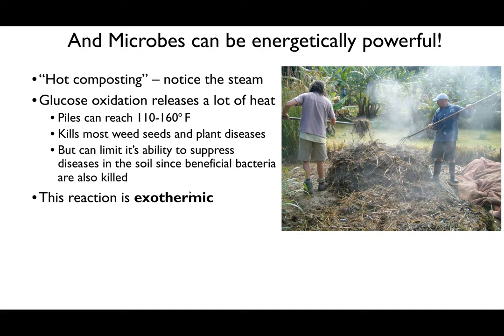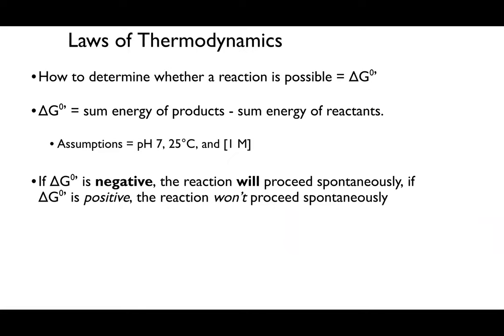The reaction generating energy is what we call exothermic. To talk about this, we need to discuss the laws of thermodynamics. The easiest way to determine whether a reaction is possible is by looking at its delta G naught—the sum of the energy of products minus the sum of the energy of reactants. Assumptions are a pH of seven, 25 degrees, and a concentration of one molar. If delta G naught is negative, the reaction will proceed spontaneously; if positive, it will not proceed spontaneously.